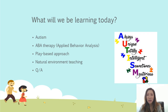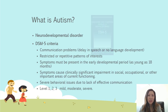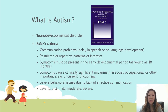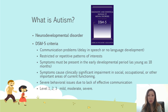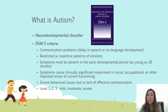So what is autism? Autism is a neurodevelopmental disorder that affects areas of a child's development. Based on the DSM-5 criteria, it includes delay in speech or no language development at all, and restricted and repetitive patterns of interest. You might see a child who is really obsessed with a certain topic or certain toy and unable to enjoy doing other things — a child might be lining up cars or lining up shampoo bottles and just be really fixated on certain things.